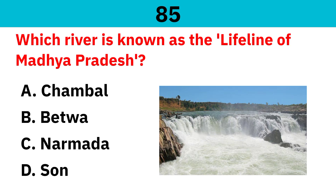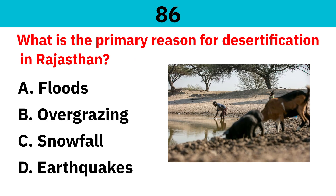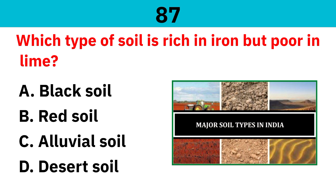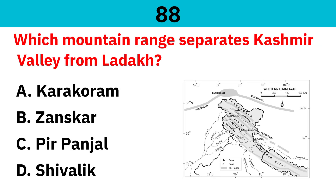Which river is known as the lifeline of Madhya Pradesh? Correct answer is Narmada. What is the primary reason for desertification in Rajasthan? Correct answer is overgrazing. Which type of soil is rich in iron but poor in lime? Correct answer is red soil. Which mountain range separates the Kashmir Valley from Ladakh? Correct answer is Zanskar.